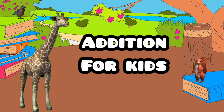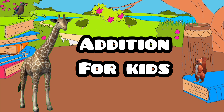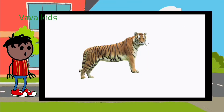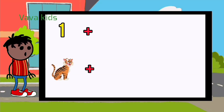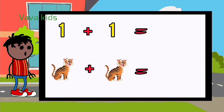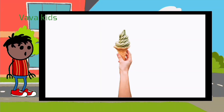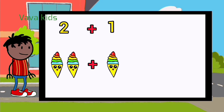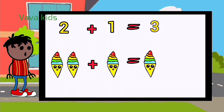Addition for Kids. Tiger: 1 plus 1 equal 2 — 1, 2. Cornice: 2 plus 1 equal 3 — 1, 2, 3.